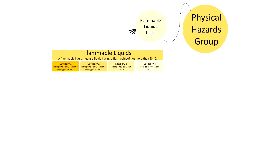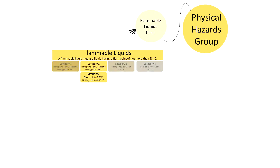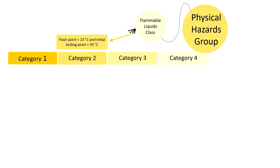This class has four categories, defined by the flash point, which is the temperature at which the vapor forms an ignitable mixture in air, and the boiling point. Methanol has a flash point of 9.7 degrees Celsius and a boiling point of 64.7 degrees Celsius. Therefore, methanol is a category 2 flammable solvent, the second most severe category for that class.